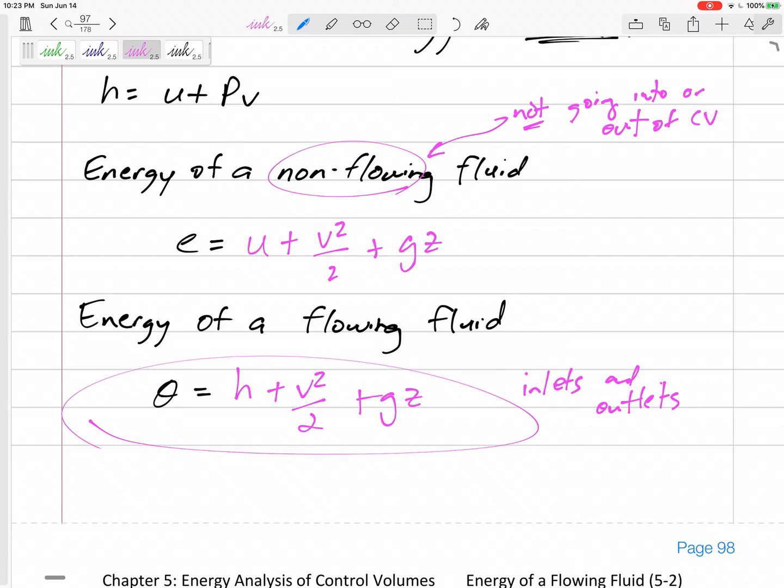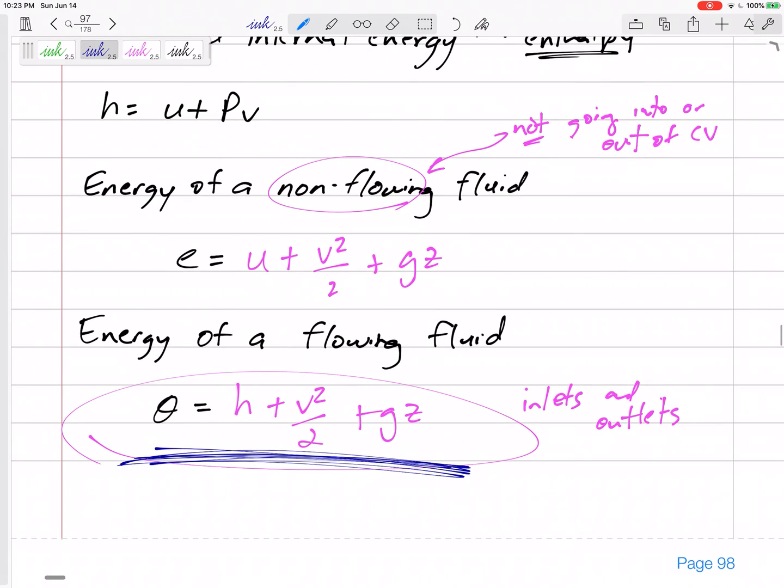For inlets, the energy of the fluid going in and out is h plus v squared over 2 plus gz. That's in addition to any q coming in or out, and in addition to any work crossing our boundaries. This is just for the inlets. Let's look at some problems.